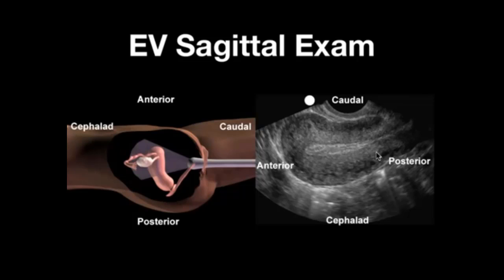I always recommend starting with the transabdominal exam regardless of how early you think the patient is. With the lower-frequency transducer you get a broader view of the pelvic anatomy, and it's possible with the high-frequency coned-in endovaginal image to miss pathology. If the transabdominal exam gives you your answer, you can stop there. If not, then move on to the endovaginal exam.